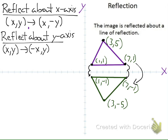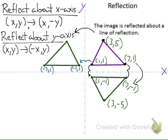Now let's do another one — reflection about the y-axis, going in this direction. I started at (1, 1) and I'm going to go one unit away on the other side. I went to (3, 5), so I'm going to go three units over on the other side. And (7, 1) — I'm going to go seven units on the other side. I connect my lines and here's my reflection about the y-axis. As my notation says, I just change the sign of the x-value: (1,1) becomes (negative 1, 1); (7,1) becomes (negative 7, 1); and (3,5) becomes (negative 3, positive 5).